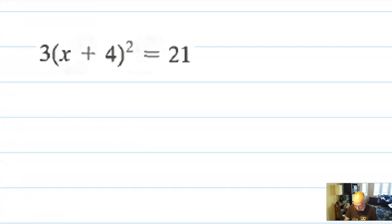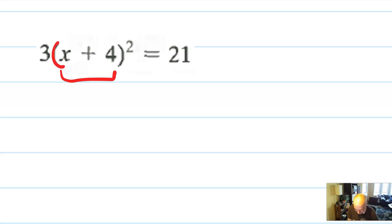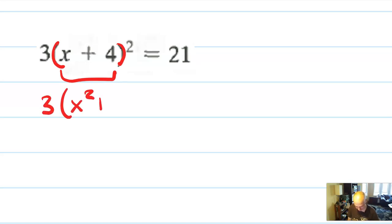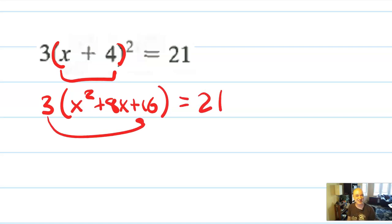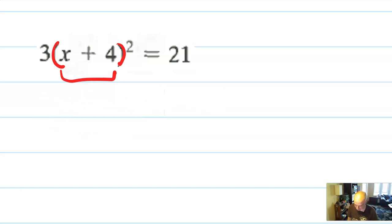Let's see this in a different application. We have (3x + 4)² = 21. Here's what I see students do: they see the parentheses and think they must expand it first — so they write 3 times (x² + 8x + 16) equals 21, and then you have to multiply through by 3, and I'm already bored. Don't do it this way — that's the fool's way.